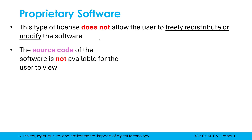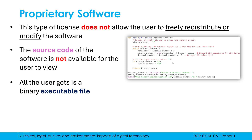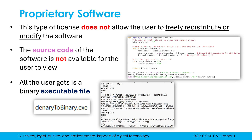An important characteristic of proprietary software is that the source code will not be available for the user to view. The source code is whatever the developer has typed in Python, Java, or whatever language was used to create the software. For the vast majority of programs, you will never be able to see the source code because most programs are proprietary. Instead, users are given an executable file — a file you can double-click to run, which is in binary machine code. If you opened it, you'd see complete gibberish, but double-clicking it runs the software. The source code is hidden from you.